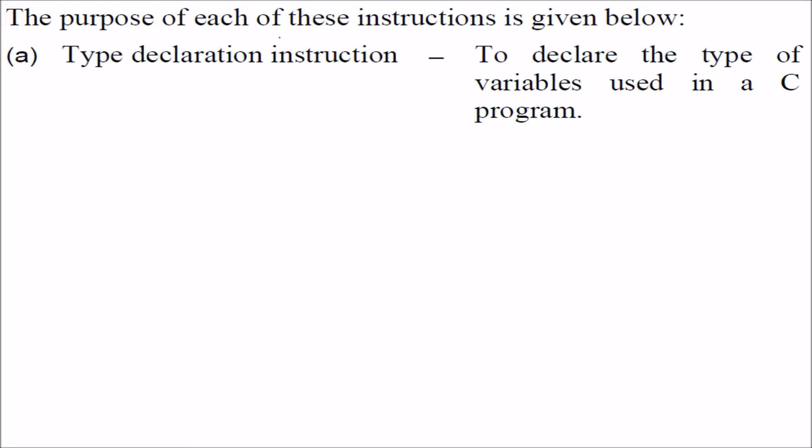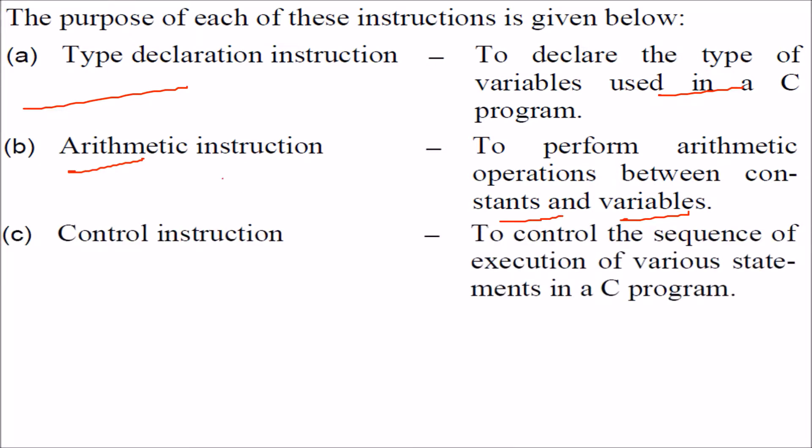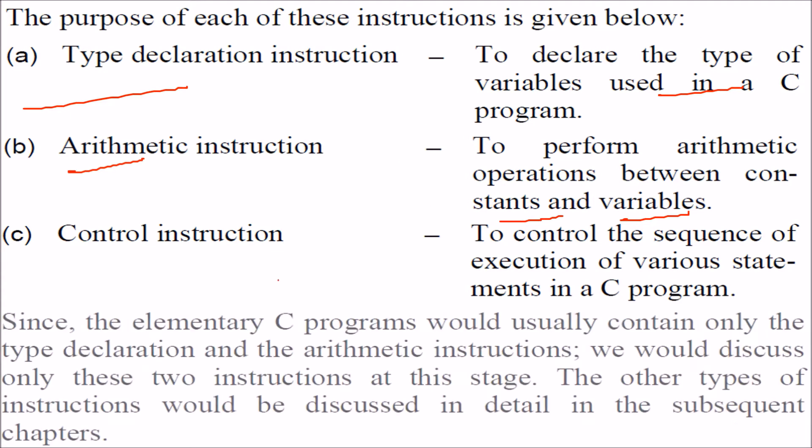What is the purpose of these instructions? Type declarations declare the type of variables used in C programs. Arithmetic instructions perform arithmetic operations between constants and variables. Control instructions implement the sequence of execution of various statements in C programs. Since elementary C programs contain only type declaration and arithmetic instructions, we will discuss a few of them now.